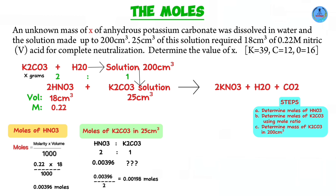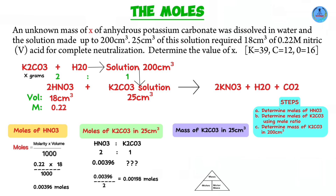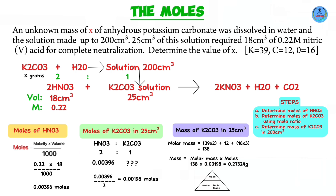Now determining the mass of potassium carbonate in 25 cubic centimeters. We know the moles, and we use the formula mass equals moles multiplied by molar mass. From the formula K2CO3, we have two potassium atoms: 39 by 2; plus one carbon atom: RAM 12; plus three oxygen atoms: 16 by 3. This gives a molar mass of 138. So mass equals 138 multiplied by 0.00198, giving a mass of 0.27324 grams.